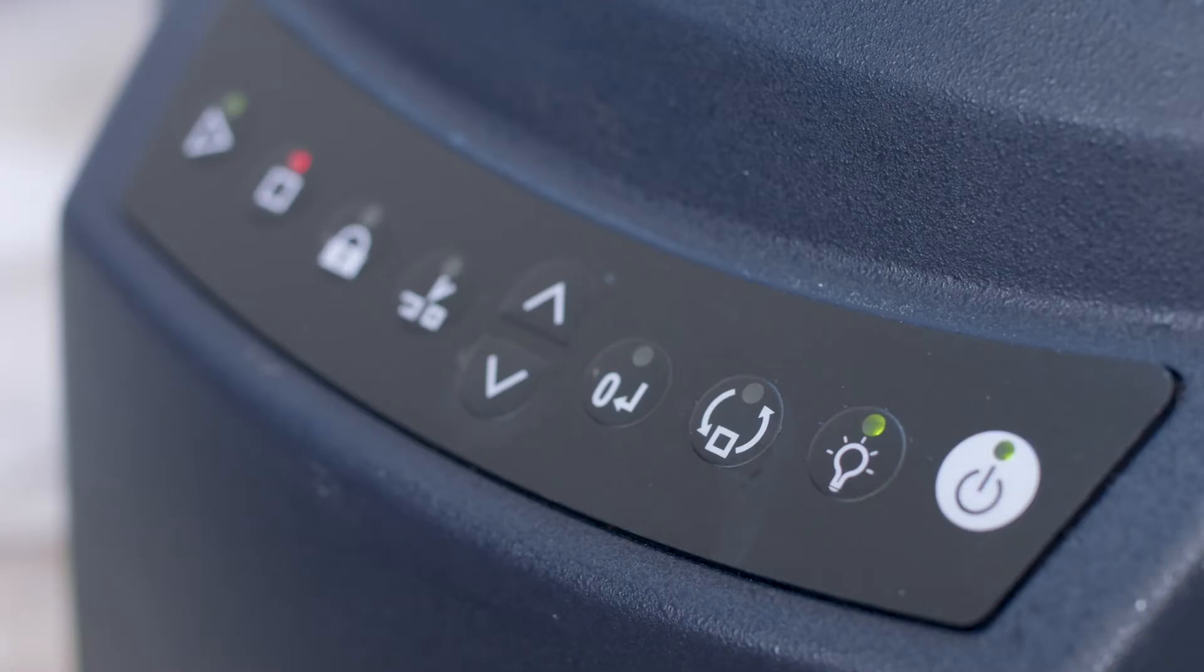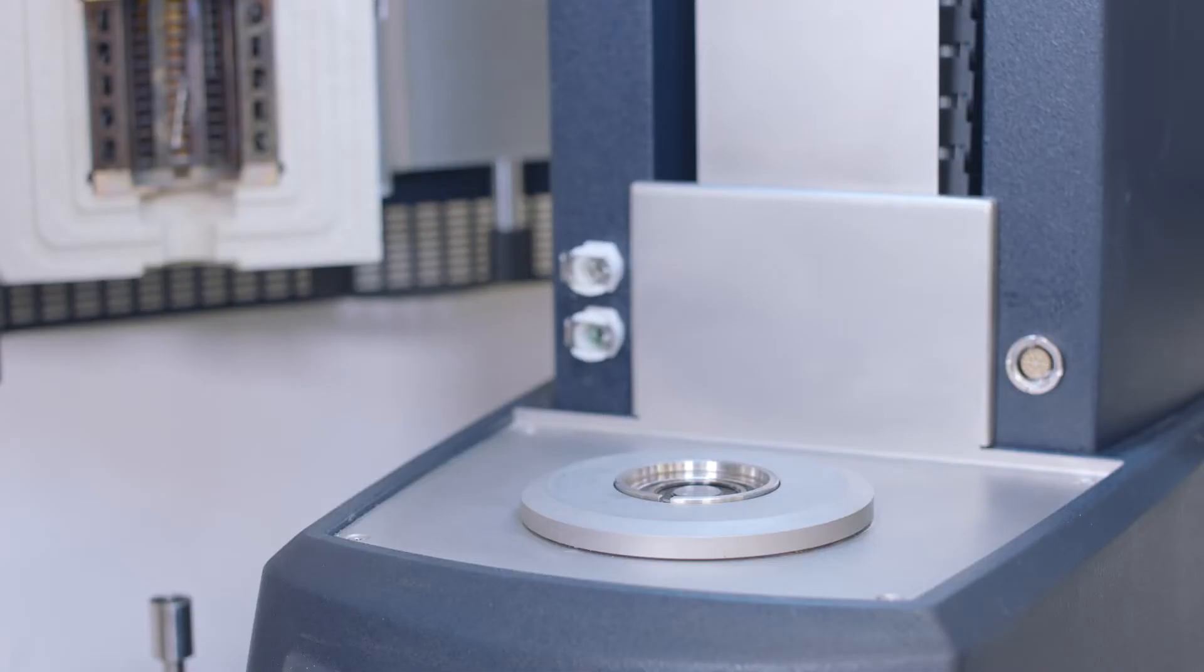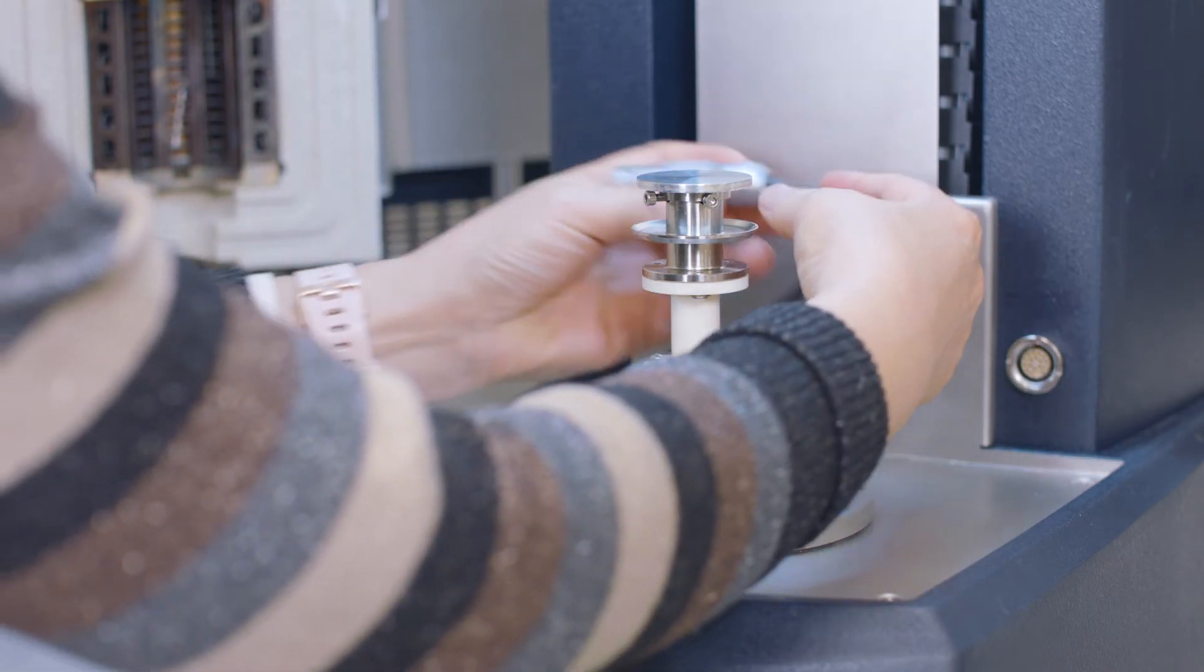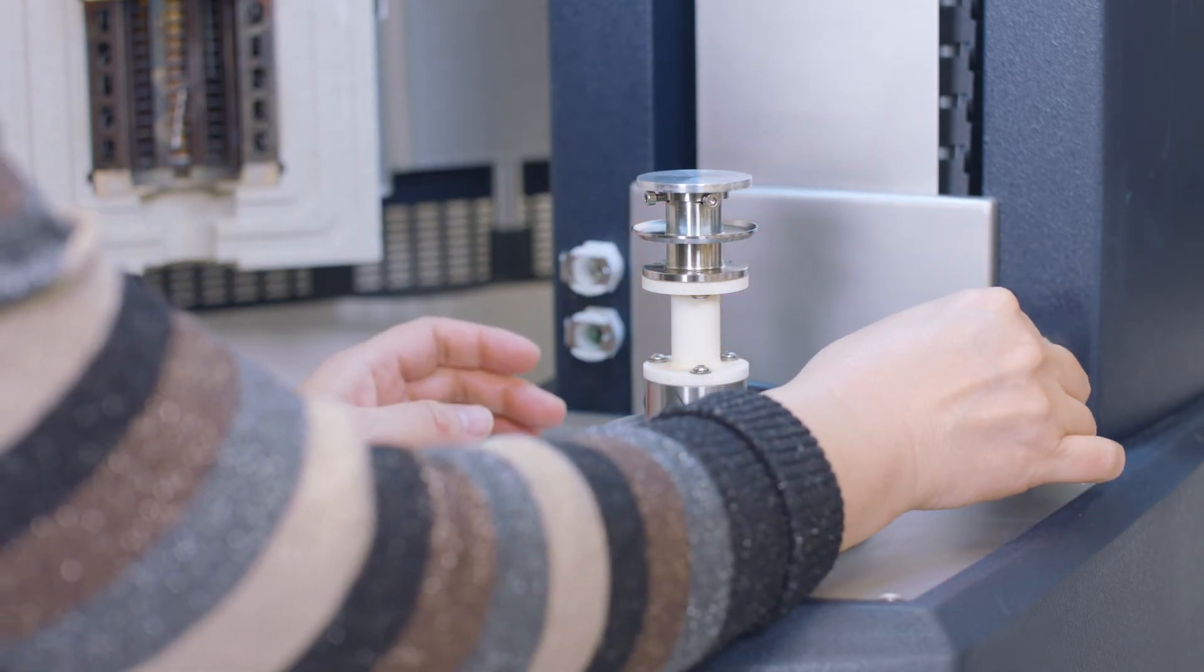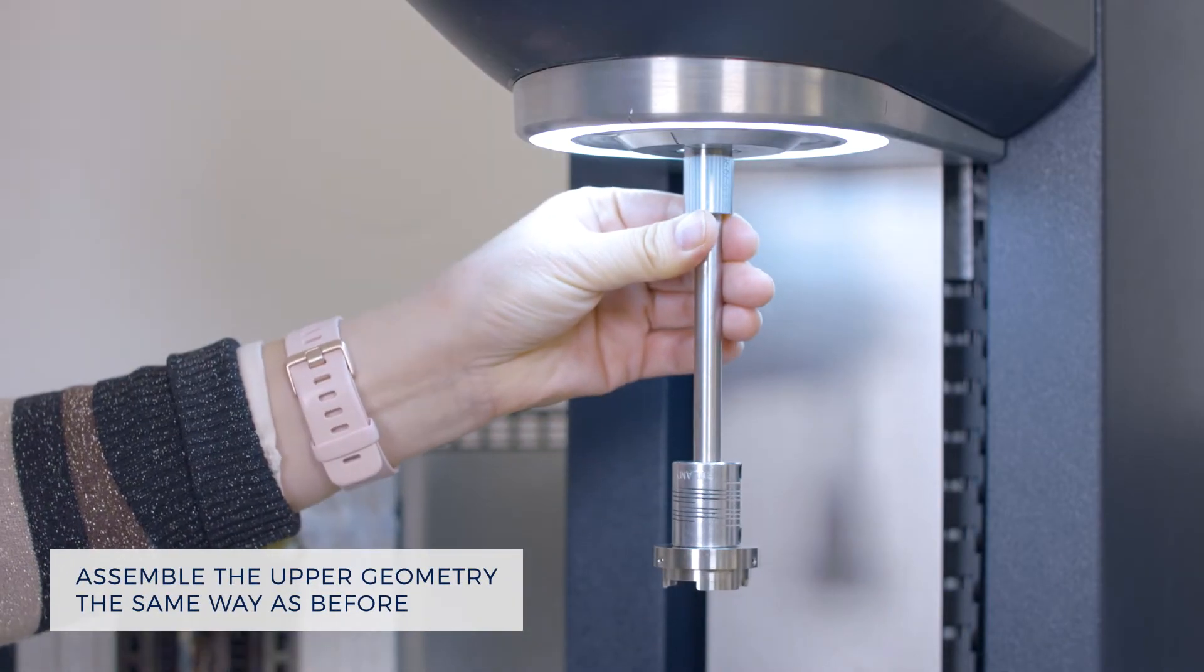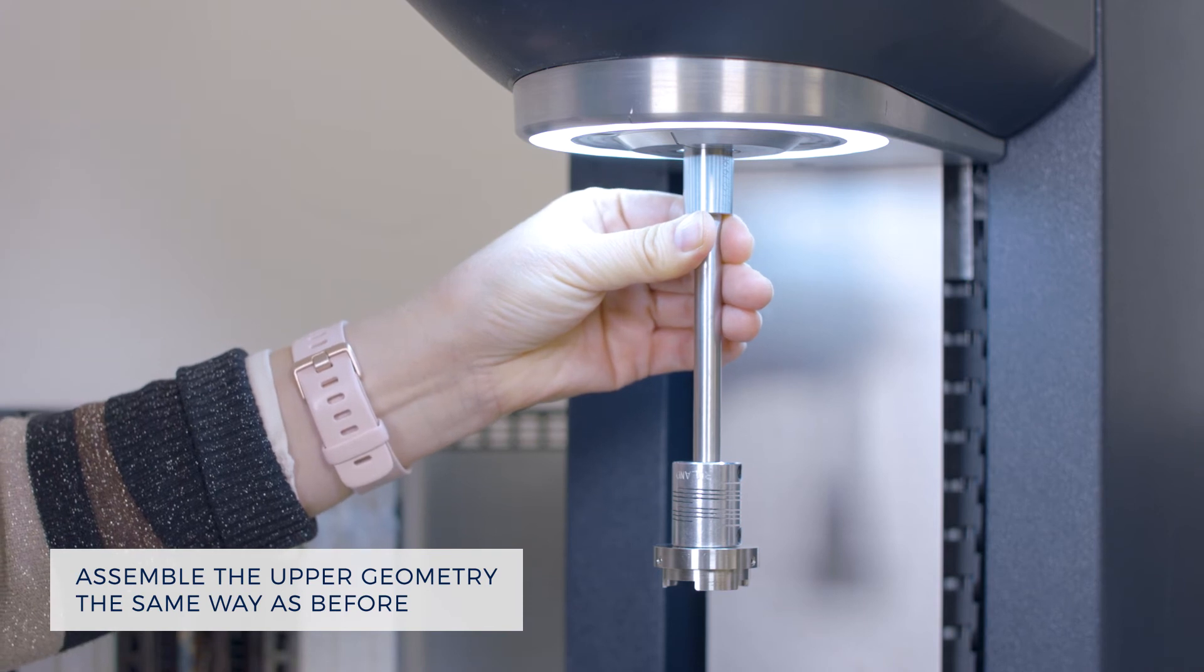From the instrument control panel, press this button to temporarily release the magnet. Put this ETC bottom geometry onto the instrument bottom stage. Then insert the SmartSwap plug with the red dot facing up. After that, install the upper geometry to the rheometer.